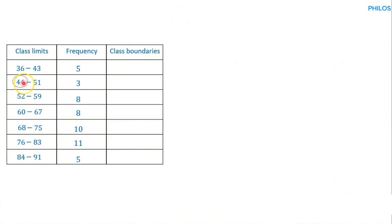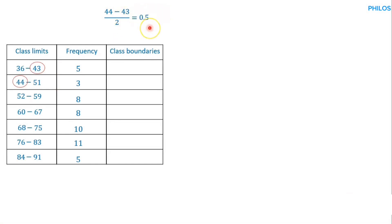To find the class boundaries correction, we take the lower class limit of the second class minus the upper class limit of the first class, then divide by two. So that gives us 44 minus 43, which is 1, divided by 2, giving us 0.5. This 0.5 is the value we'll be robbing from Peter and giving to Paul — it is called the class boundaries correction.